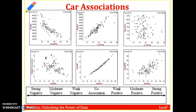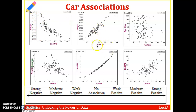Now back to the car associations. On the upper left, weight of the car versus city miles per gallon — as the weight of the car increases, the lower the miles per gallon, or conversely, higher fuel efficiency cars tend to be lighter. For fuel capacity versus weight, this is a strong positive correlation: larger cars with bigger fuel tanks weigh more.